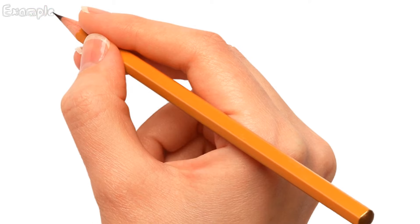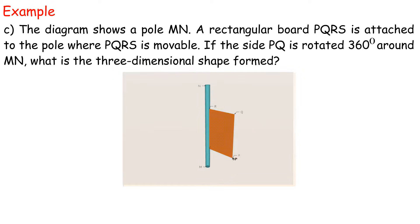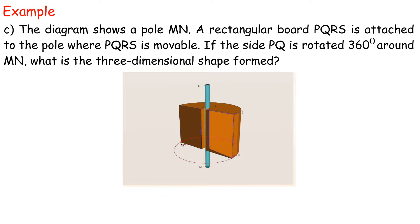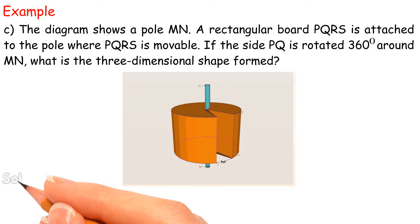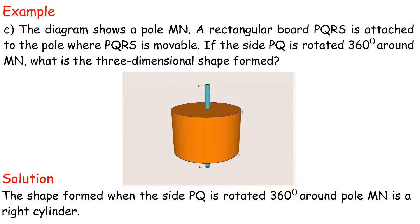Example C: the diagram shows a pole MN. A rectangular board PQRS is attached to the pole where PQRS is movable. If the side PQ is rotated 360 degrees around MN, what is the three-dimensional shape formed? Solution: the shape formed when the side PQ is rotated 360 degrees around pole MN is a right cylinder.